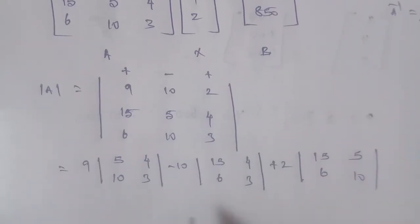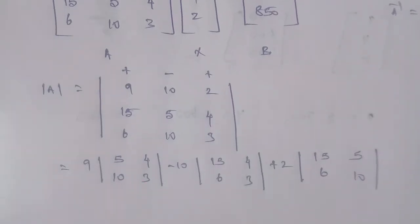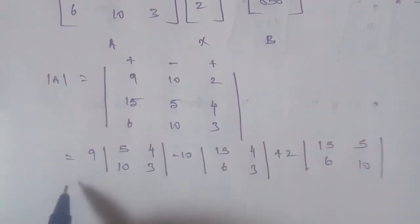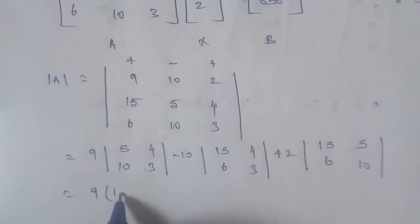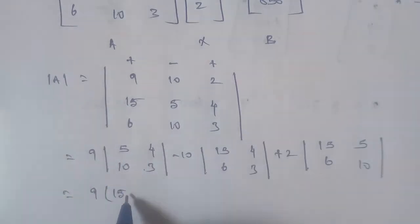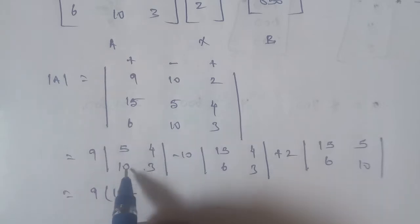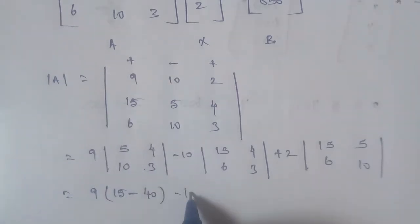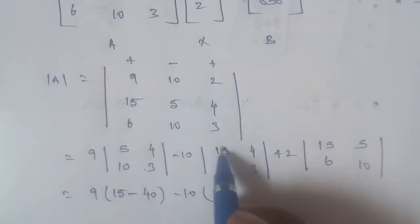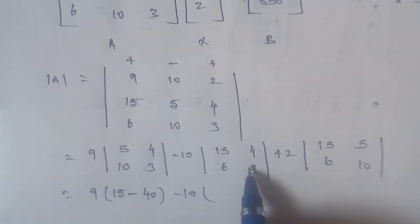Computing the 2x2 determinants: for element 9, the sub-determinant is (5×3 minus 4×10) = 15 minus 40 = minus 25. For element minus 10, the sub-determinant is (15×3 minus 4×6) = 45 minus 24 = 21. For element plus 2, the sub-determinant is (15×10 minus 5×6) = 150 minus 30 = 120.